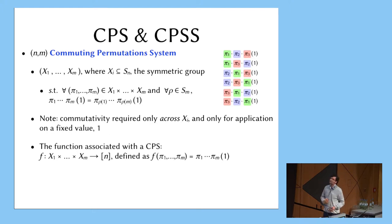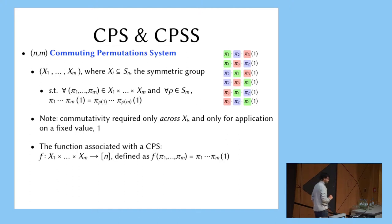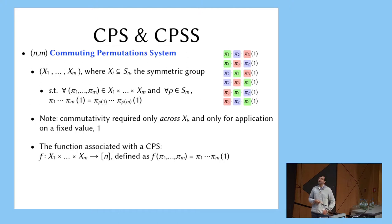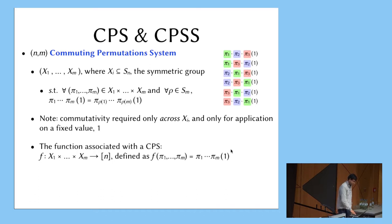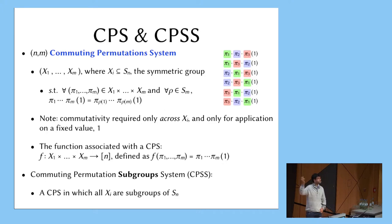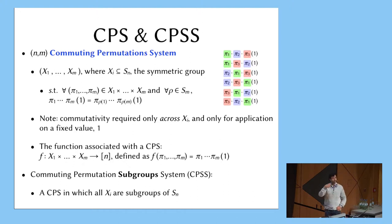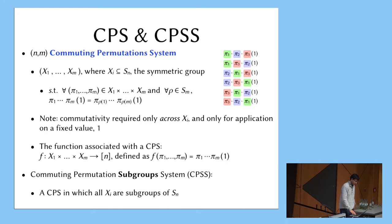CPS is not a function — it's a system, a bunch of permutations. The function associated with the CPS is the following: the inputs correspond to M permutations, one from each party, and the output of the function is just evaluating those M inputs on 1. CPSS has an extra requirement — a subgroup system — meaning each Xi should actually be a subgroup of the symmetric group SN. The symmetric group has a group structure with composition as the group operation, and these sets should all be subgroups.